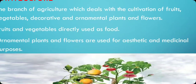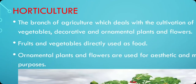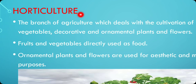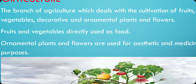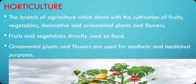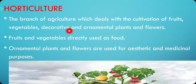Horticulture — what does it mean? Actually, Horticulture is derived from two Latin words: Hortus and Cultura. Hortus means garden and Cultura means cultivation. So, the branch of agriculture which deals with the cultivation of fruits, vegetables, decorative and ornamental plants and flowers is called Horticulture.